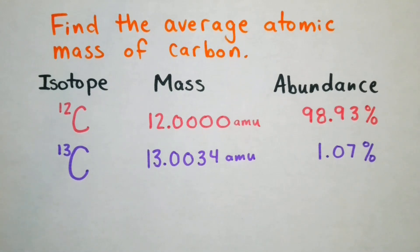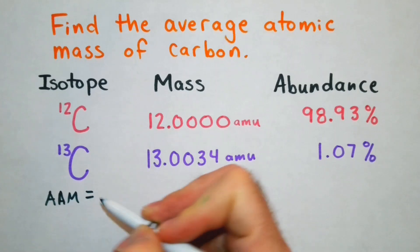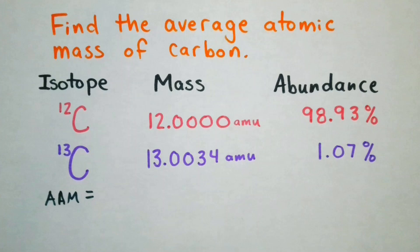So our average atomic mass, we're going to determine this by multiplying our mass and abundance of each isotope.